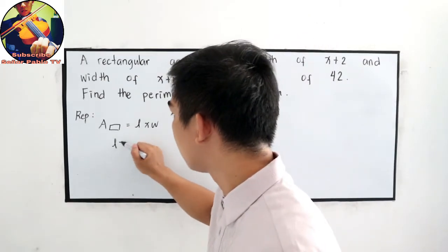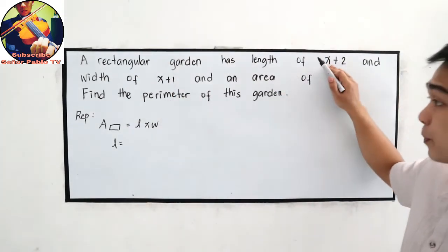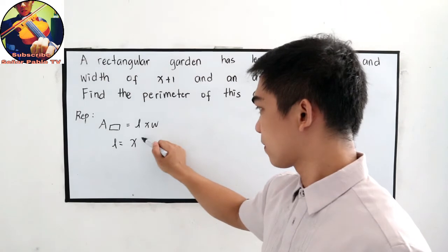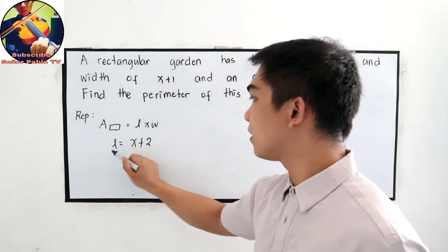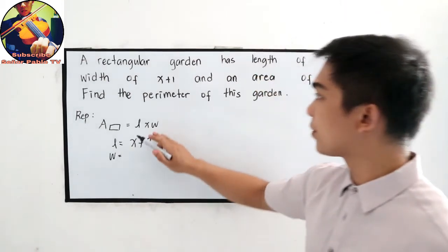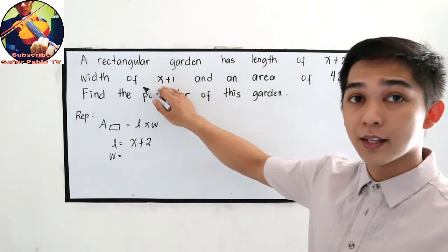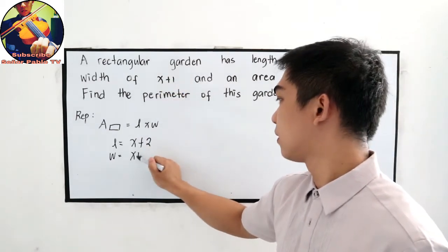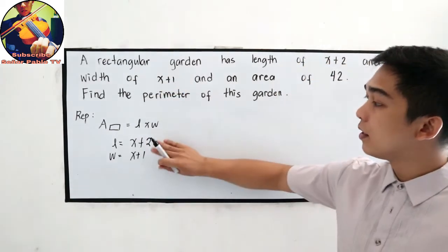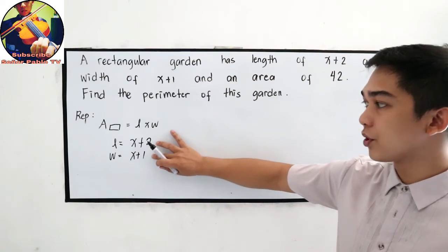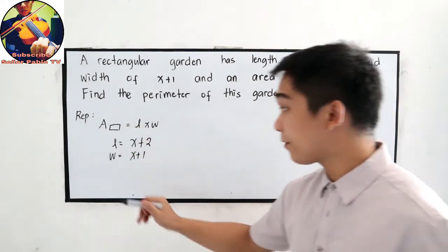So length is equal to x plus 2, and width is equal to x plus 1. Following our representation in our formula, we can find our equation.